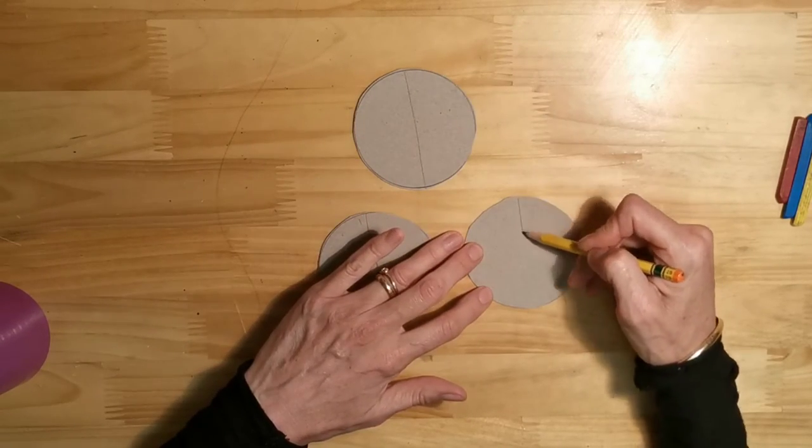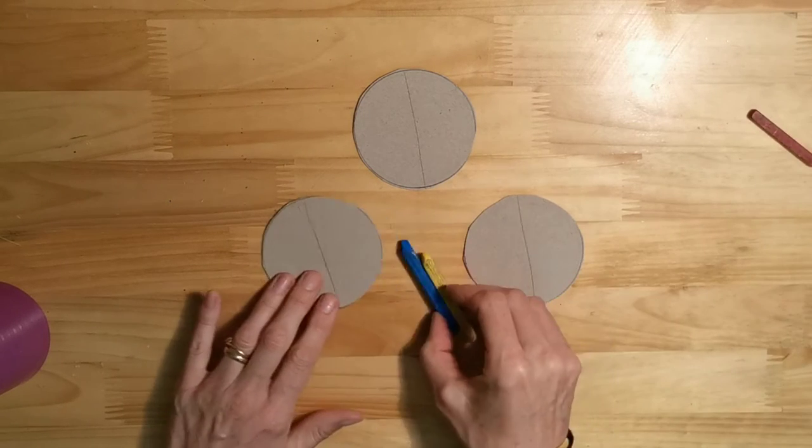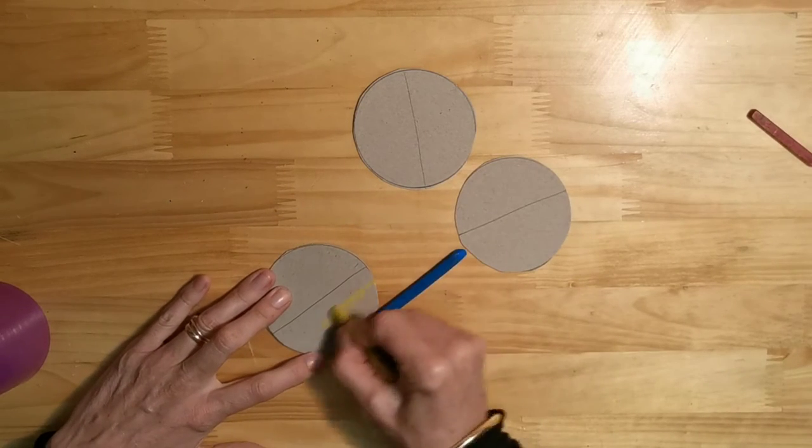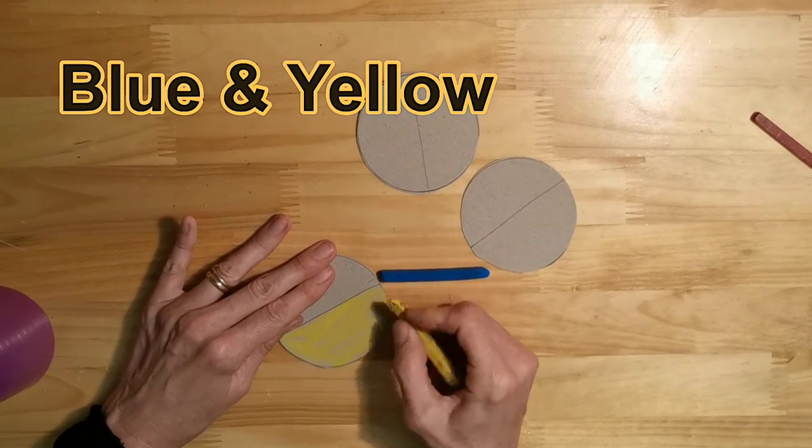Then you want to draw a line down the middle of each circle, and you're going to use red, blue and yellow, and you're going to have two colours on each circle.